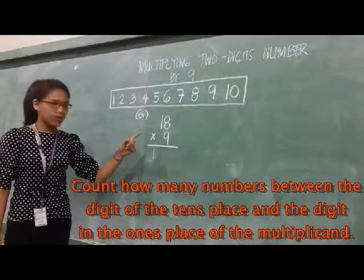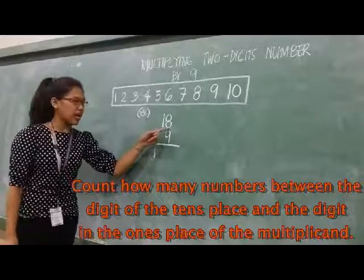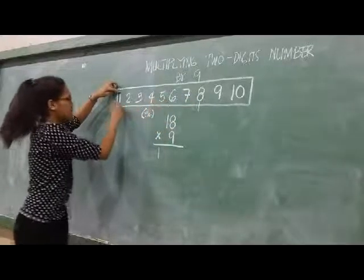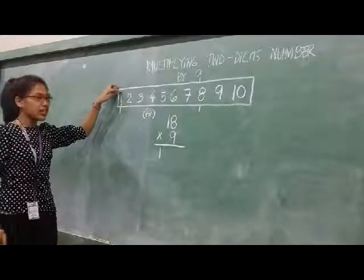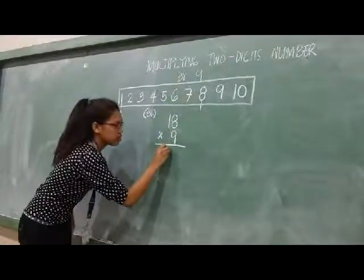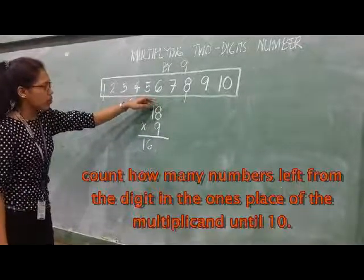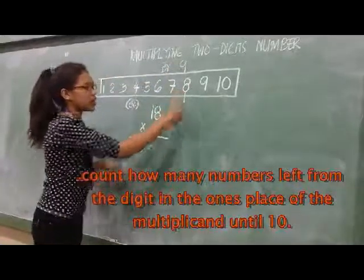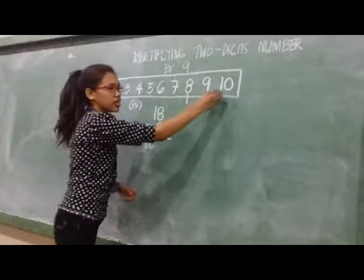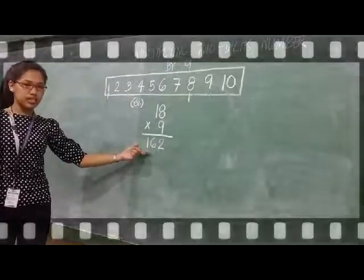Next, we will count how many numbers are between 1 and 8. So between 1 and 8, we count: 2, 3, 4, 5, 6, 7 — that gives us 6. Then we locate number 8 on the number line and count how many numbers are left until 10: 9, 10 — that gives us 2. So the product of 18 times 9 is 162.